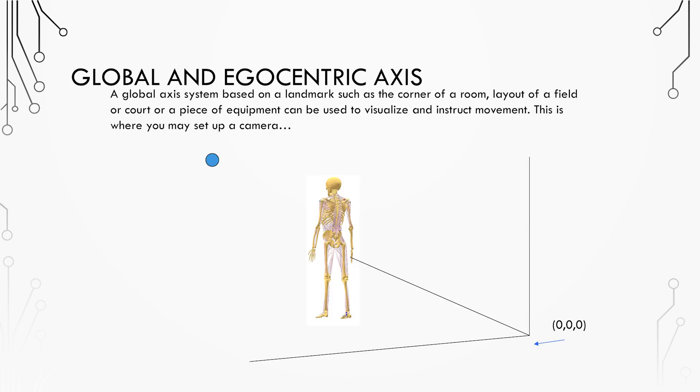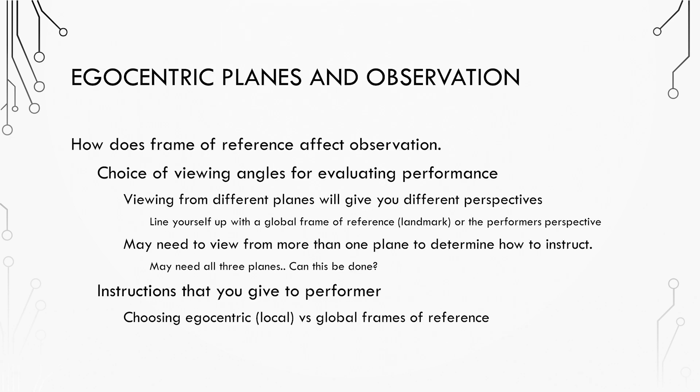A global axis system is based on a landmark such as the corner of a room or markings on a pitch or field. Frame of reference aids in choosing appropriate viewing angles in order to capture all critical movements from a point of view.